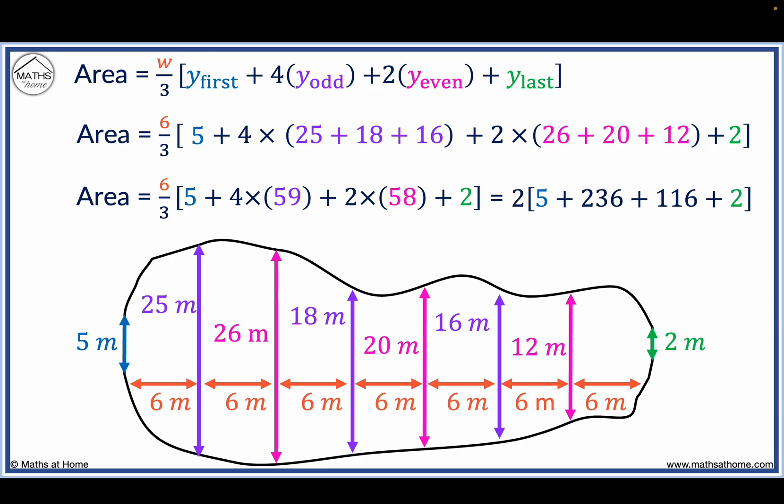Inside the brackets, we obtain 359 and 2 times 359 equals 718 metres squared. The area of this shape is estimated to be 718 metres squared.